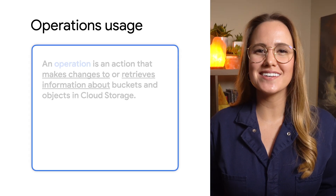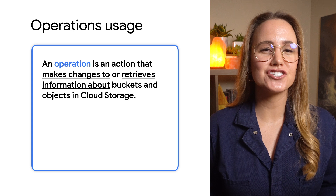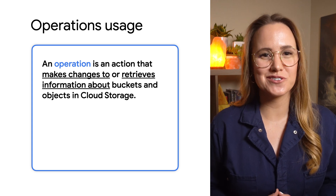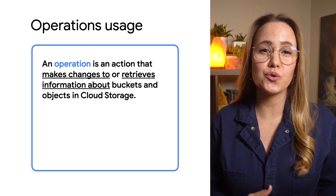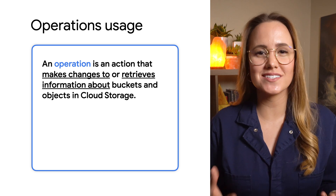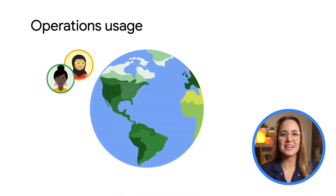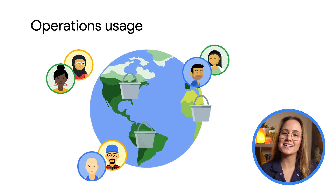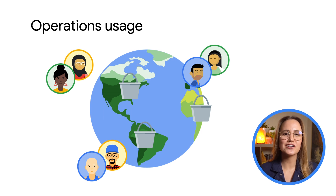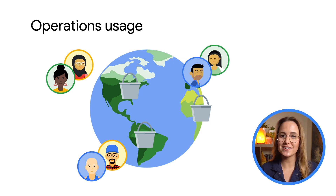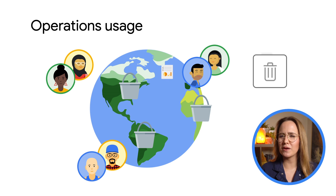The fourth factor to consider with billing is operations. Operation charges apply when you perform operations within cloud storage. An operation is an action that makes changes to or retrieves information about buckets and objects in cloud storage. Operations are divided into three categories: class A, class B, and free. Class A includes creating storage buckets and objects. Class B includes retrieving storage objects. And free operations are primarily deletions. For a full list of operations that fall into each class, check the documentation.